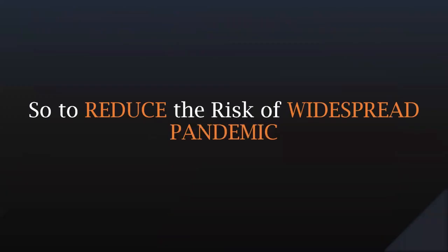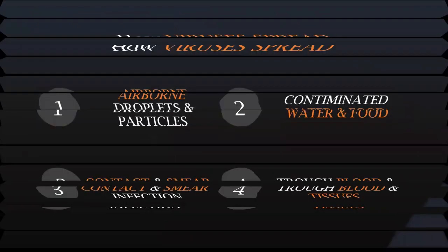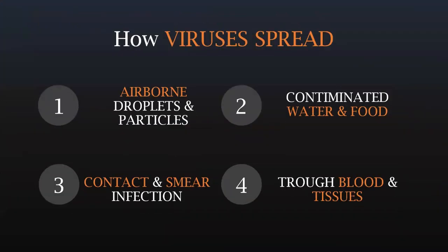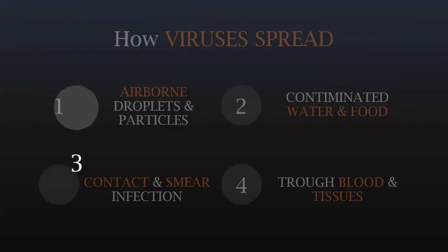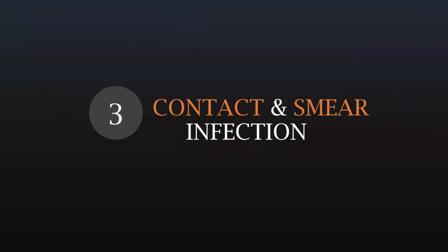So, to reduce the risk of widespread pandemics, we need to know how viruses are spread. They are spread through airborne droplets and particles, contaminated water and food, contact and surface infection, and through blood and tissues. Today, we will be focusing on contact and surface infection.